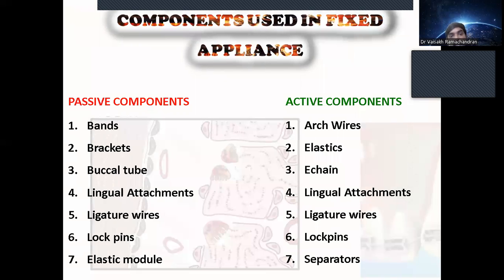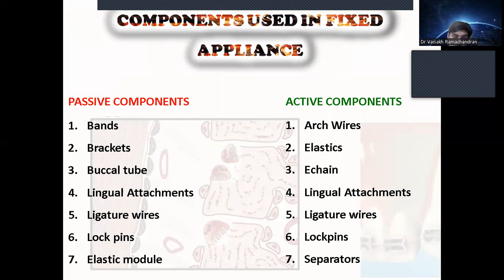The main components used in fixed appliances are passive components and active components. Passive components only anchor the appliance to the teeth — they have no role in moving the tooth. But active components are responsible for moving the teeth and correcting the malocclusions.